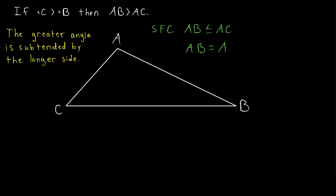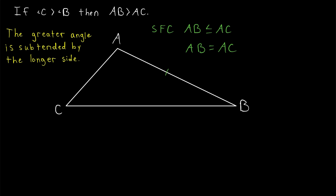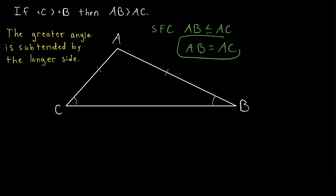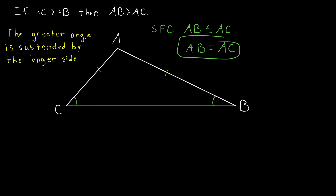If AB is equal to AC, we can mark that on the diagram — a mark on AB and a mark on AC to show they are congruent sides. But by the isosceles triangle theorem, if two sides are congruent, then the angles opposite them are also congruent. So that would mean the angle opposite AB, which is angle C, and the angle opposite AC, which is angle B, are congruent. That's a contradiction because angle C is greater than angle B. So if AB equals AC, these two angles would be congruent by the isosceles triangle theorem, and that contradicts angle C being greater than angle B.